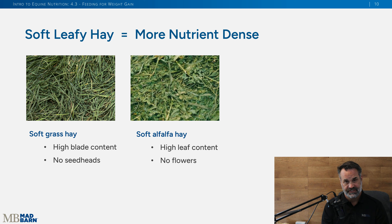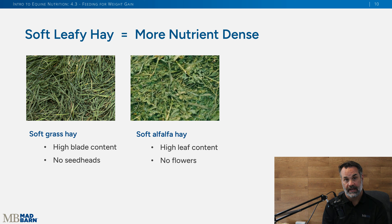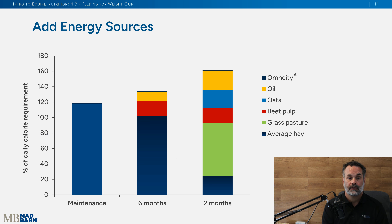To identify nutrient-dense hay, look for soft stems and soft blades in the grass — you don't want to see any seed heads. For alfalfa, you want leafy, soft leaves and no flowers. That's your nutrient-dense hay that you want to look for. That covers forage — now how else can we help this horse gain weight?